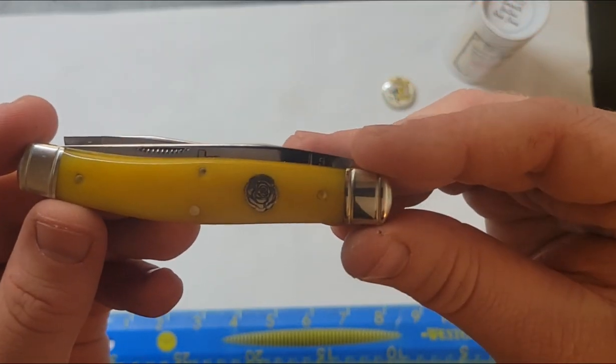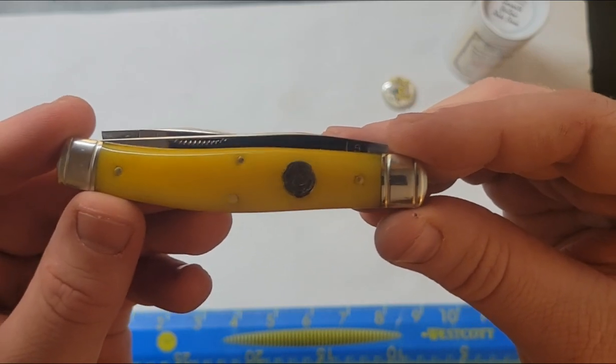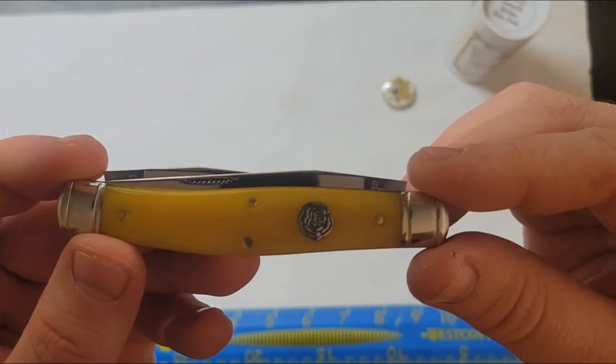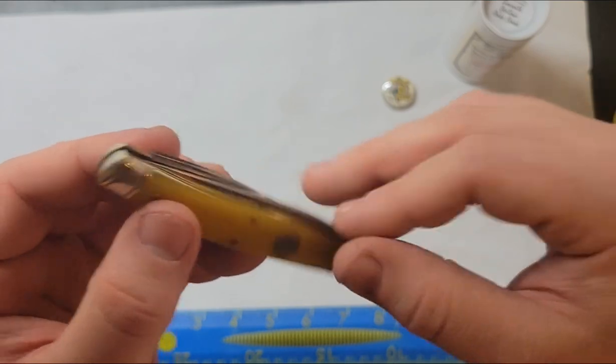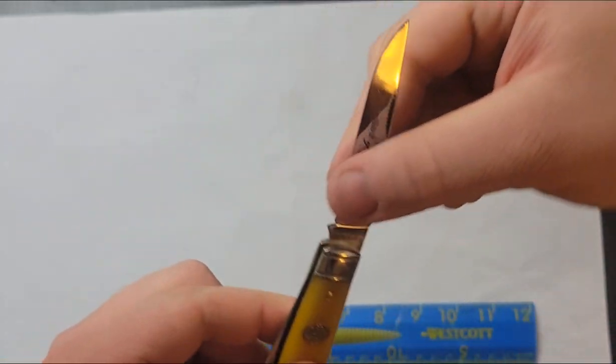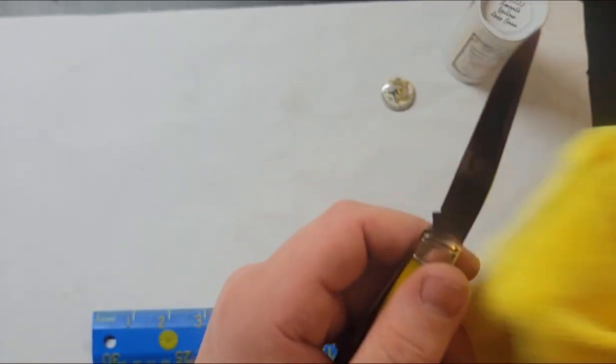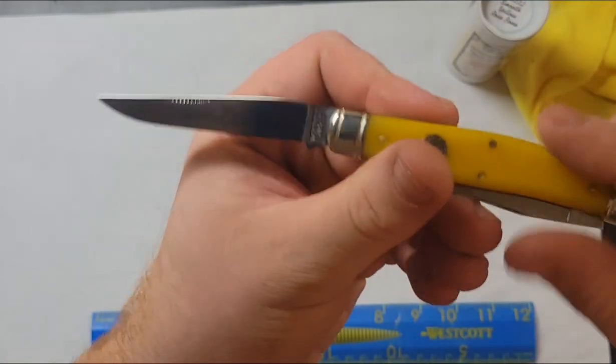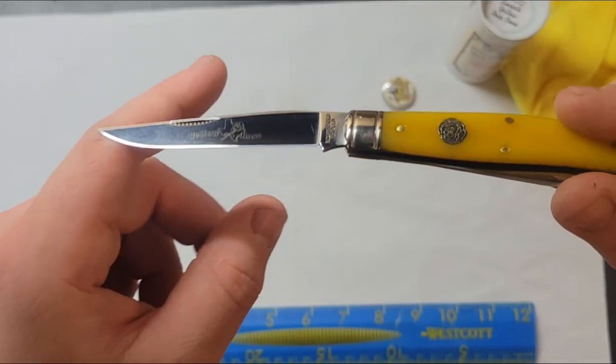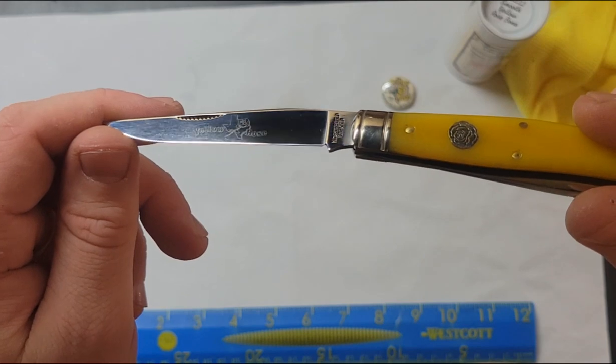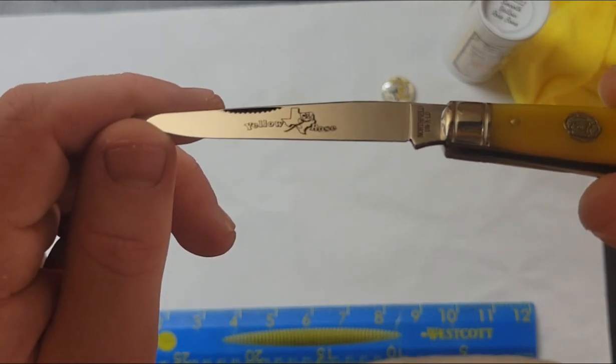This has the match strike pull, nail nick I guess, whatever you would call it. Let me wipe that off. Let's see if I can get the etch in there. There we go.